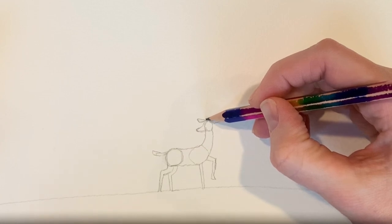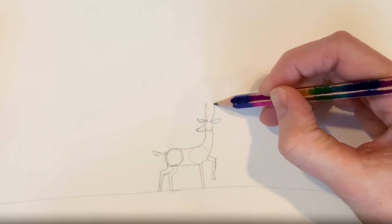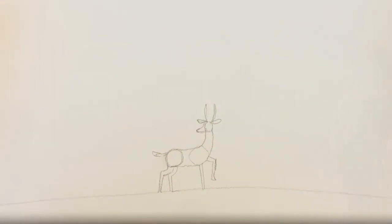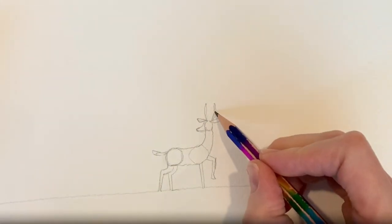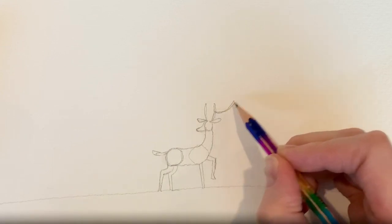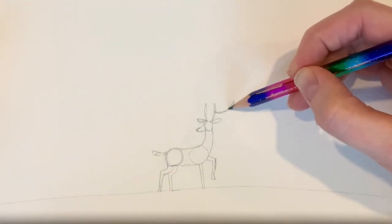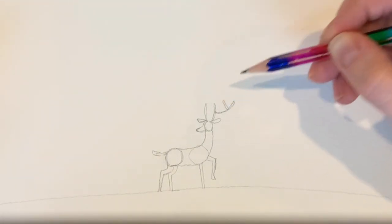So for the antlers, I'm going to go up, make a little line going straight up. Then I'm going to start about in the middle of that line and make a curved line coming out. Then I'll add another small piece to make this kind of into a letter Y shape.